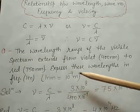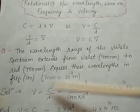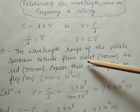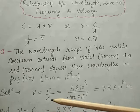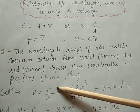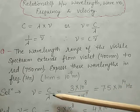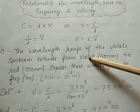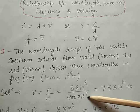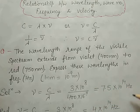First, calculate the frequency for the violet region. Frequency mu is equal to C by lambda, that is the speed of light 3 multiplied by 10 to the power 8, divided by the wavelength of the violet region, that is 400 multiplied by 10 to the power minus 9. The answer is 7.5 multiplied by 10 to the power 14 hertz.